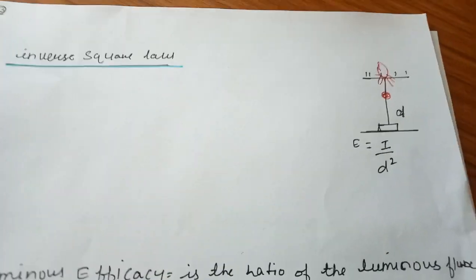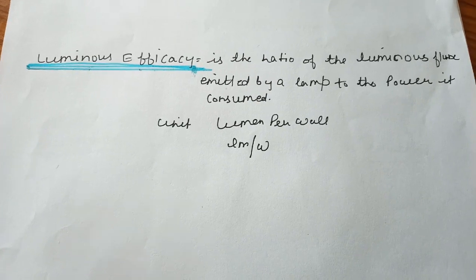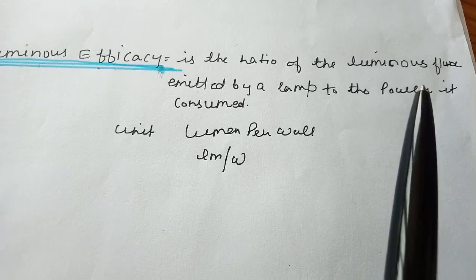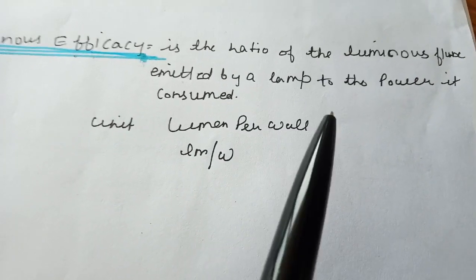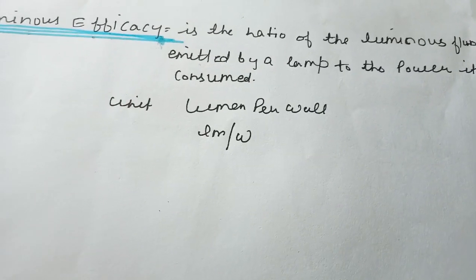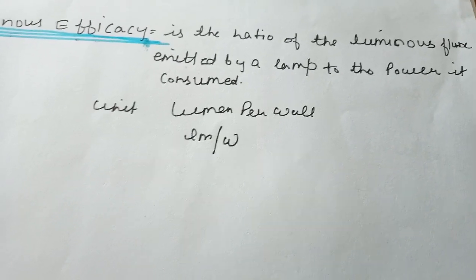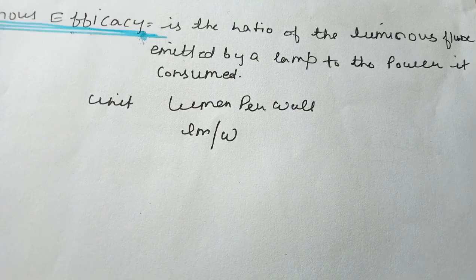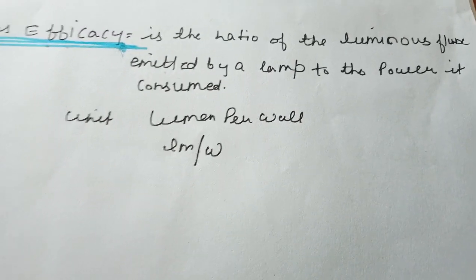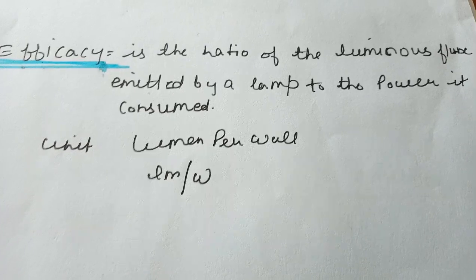Luminous efficiency is the ratio of luminous flux emitted by a lamp to the power it consumes. Therefore, luminous efficiency is expressed in lumens per watt — how much luminous flux we get per watt of power consumed.